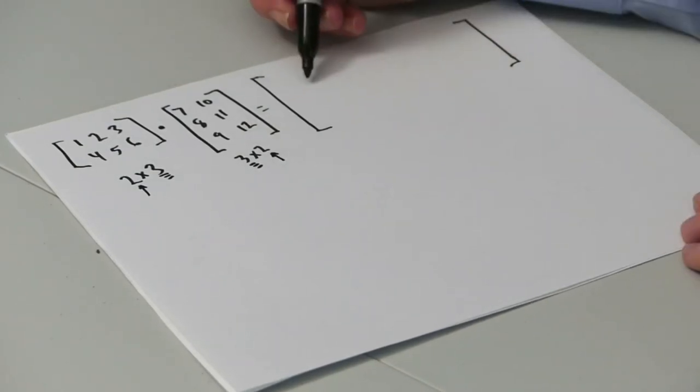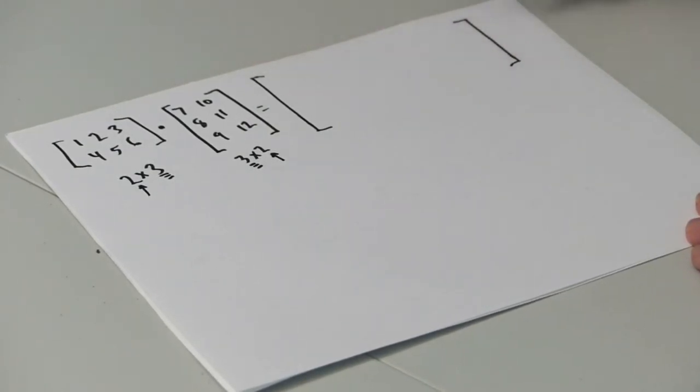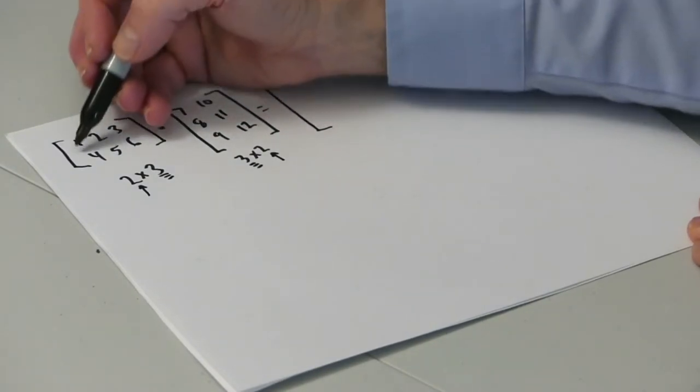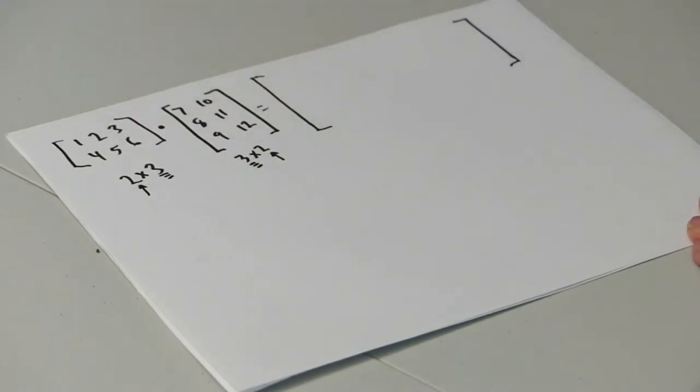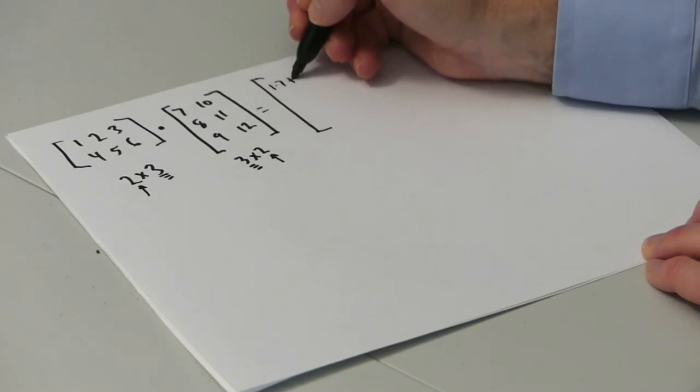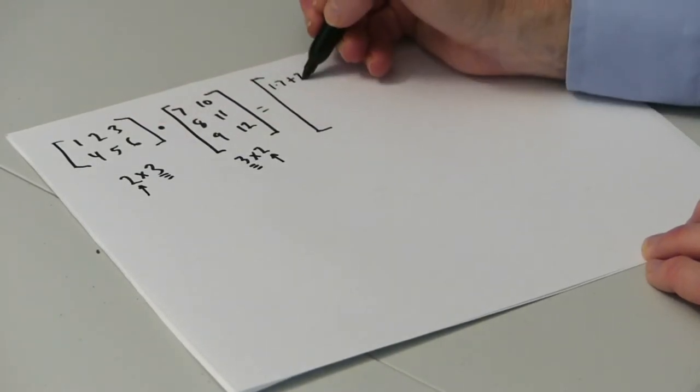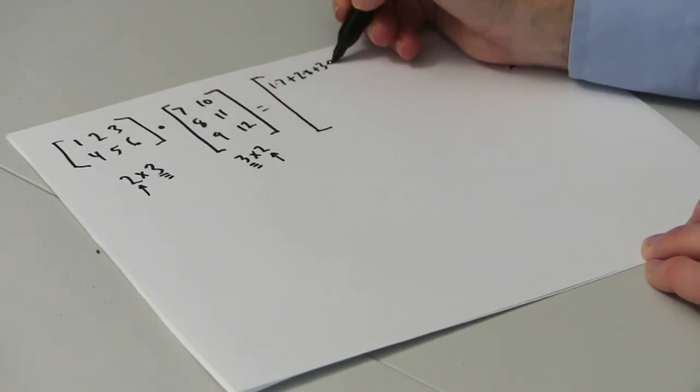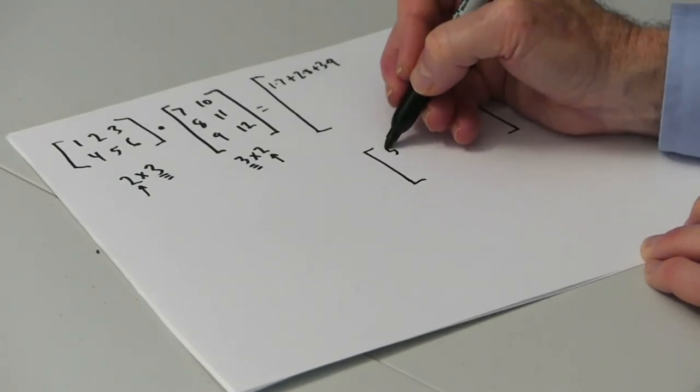The entry in row 1 column 1 of the result matrix will be the dot product of row 1 and column 1 in the first and second matrices. Dot product is a fancy name for sum of the products of the corresponding entries in a row and column. That means that row 1 column 1 of our result will be 1 times 7 plus 2 times 8 plus 3 times 9. That adds up to 50.